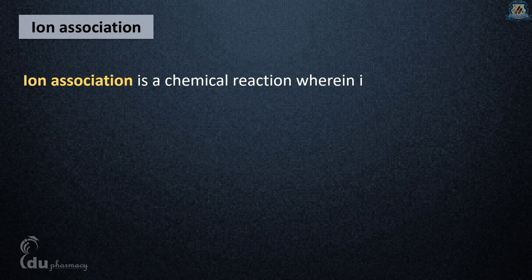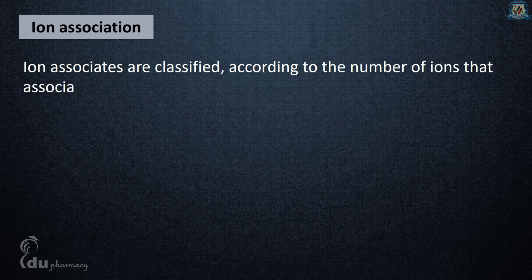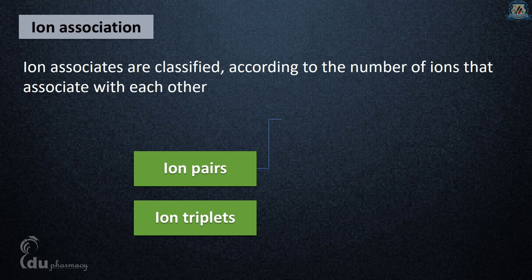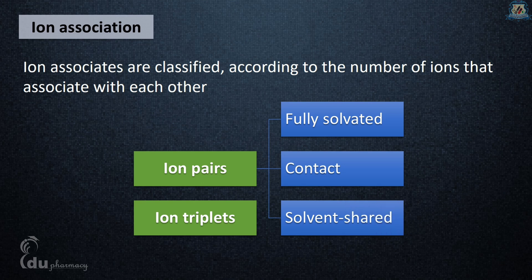Ion association is a chemical reaction wherein ions of opposite electric charges come together in solution to form a distinct chemical entity. Ion associates are classified by number of ions as ion pairs and ion triplets. Ion pairs are also classified by nature of interaction as fully solvated ion pair, contact ion pair, and solvent-shared ion pair.